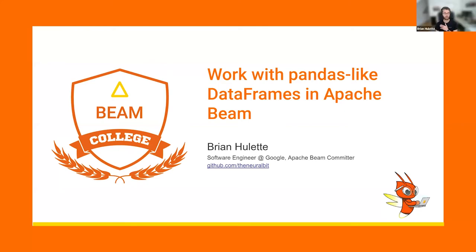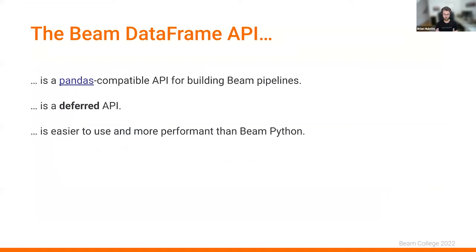First I want to talk about it at a high level. The goal of the Beam DataFrame API is to provide a pandas-compatible API that lets users build Apache Beam pipelines. If you're not familiar with pandas, that's okay — this should be accessible enough to pick up. If you've done data analytics in Python in the last 10 years, you probably know what pandas is — it's a wildly popular data analytics library.